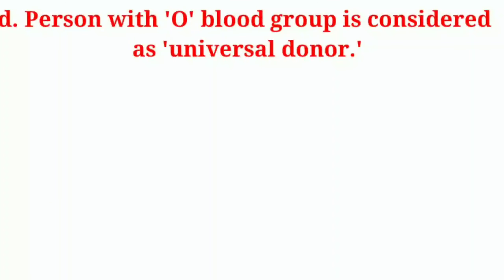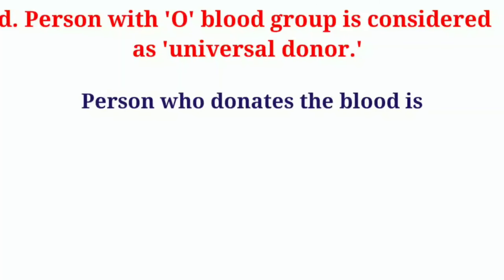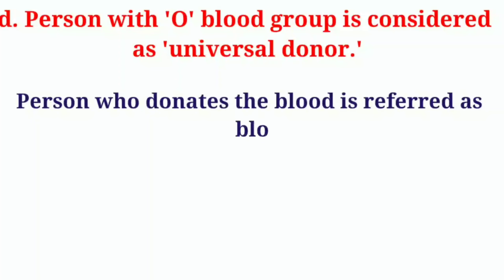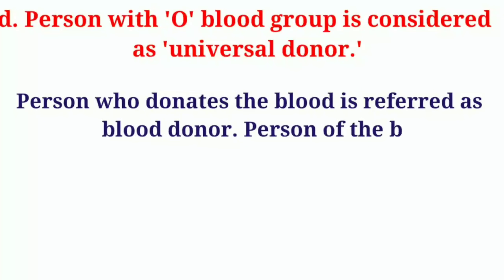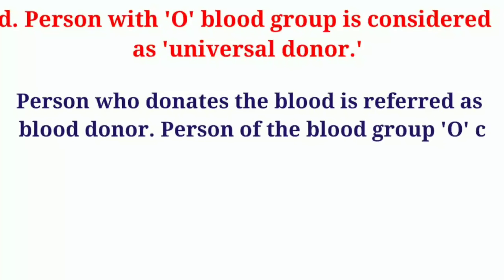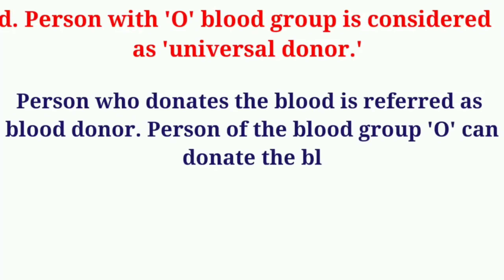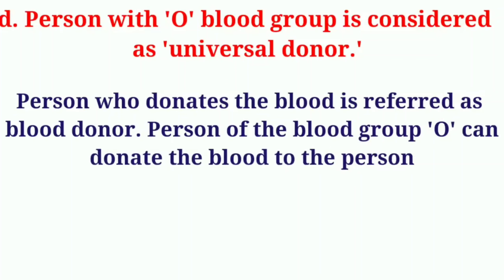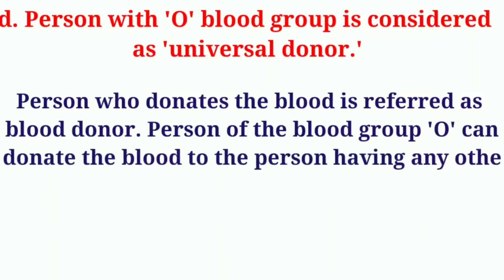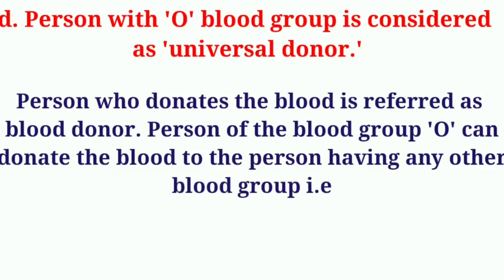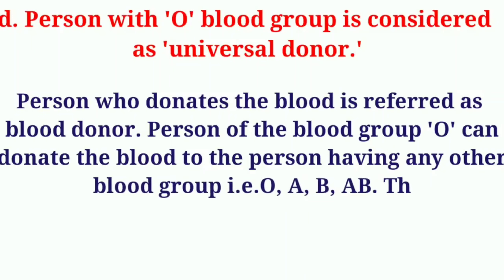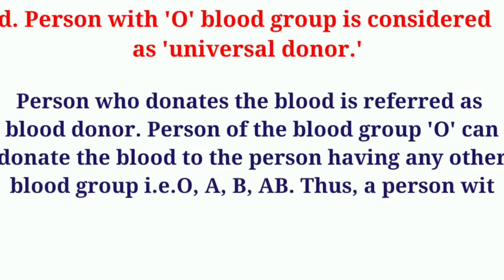A person with blood group O is considered as the universal donor. The person who donates blood is referred to as a blood donor. A person of blood group O can donate blood to a person having any other blood group – for example, O, A, B, AB. Thus, a person with blood group O is considered as the universal donor.